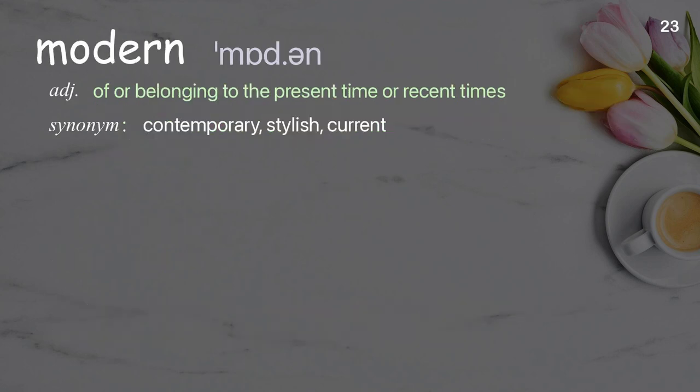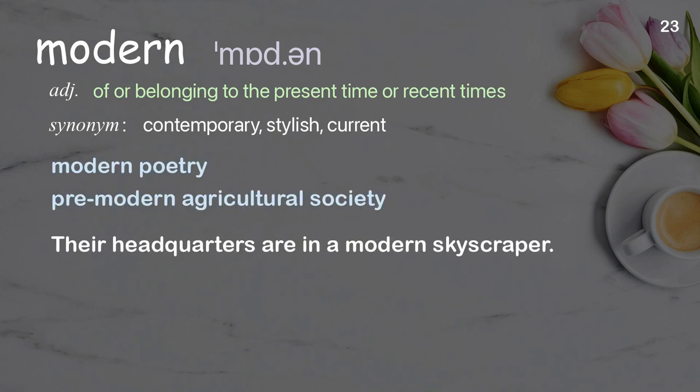Modern: Of or belonging to the present time or recent times. Examples: Modern poetry. Premodern agricultural society. Their headquarters are in a modern skyscraper.